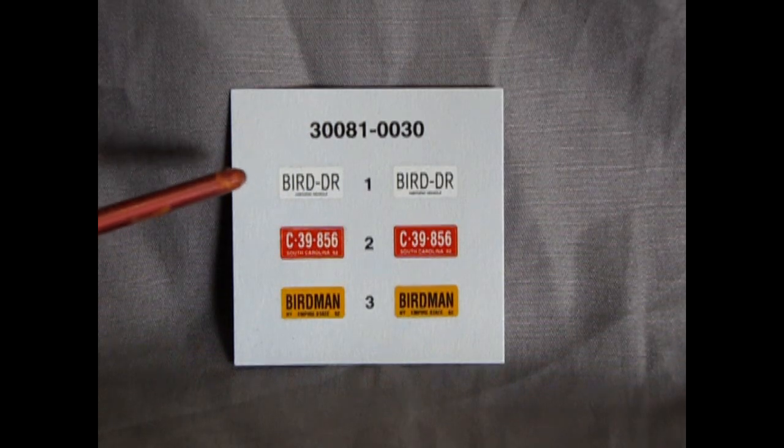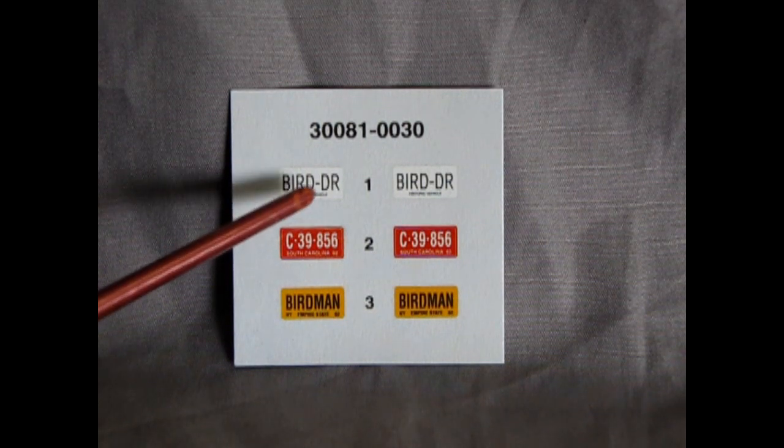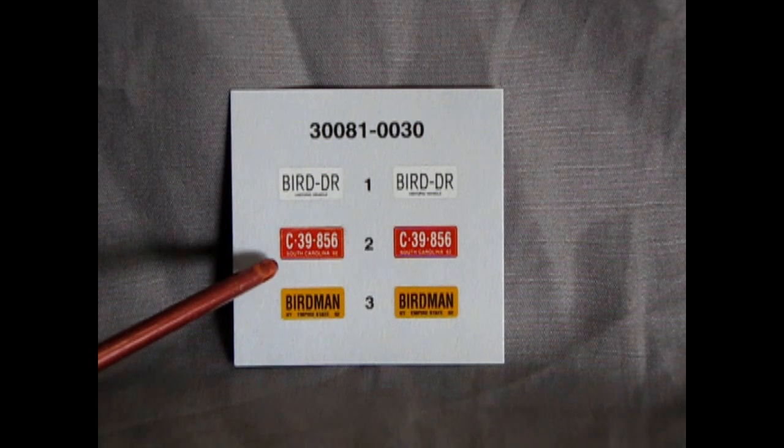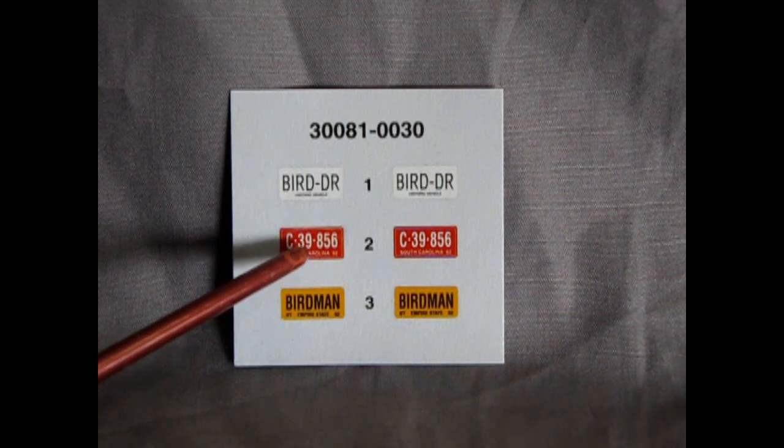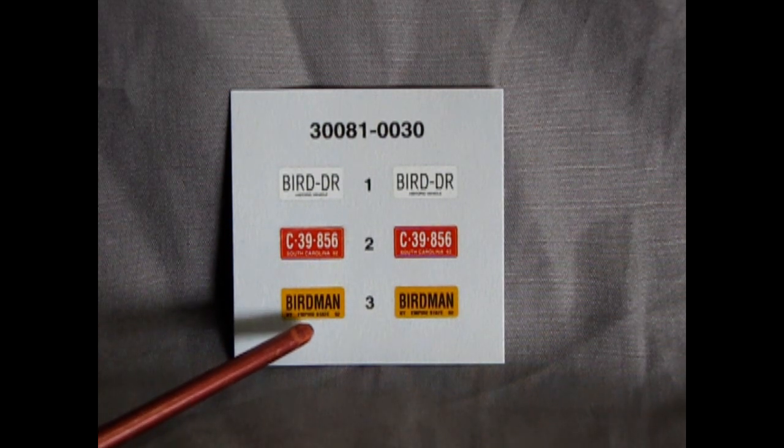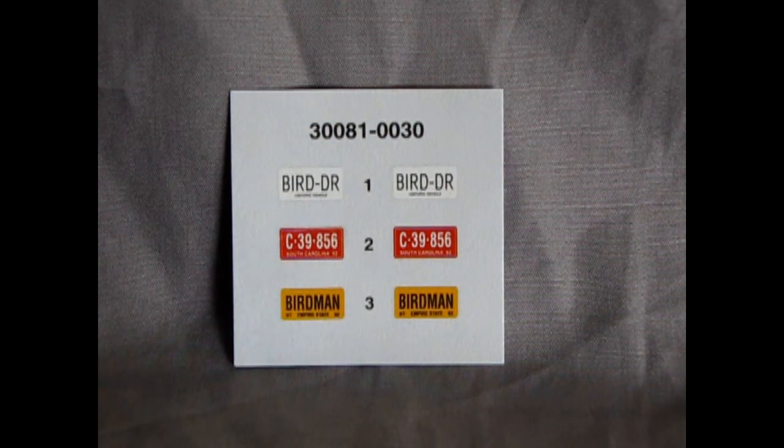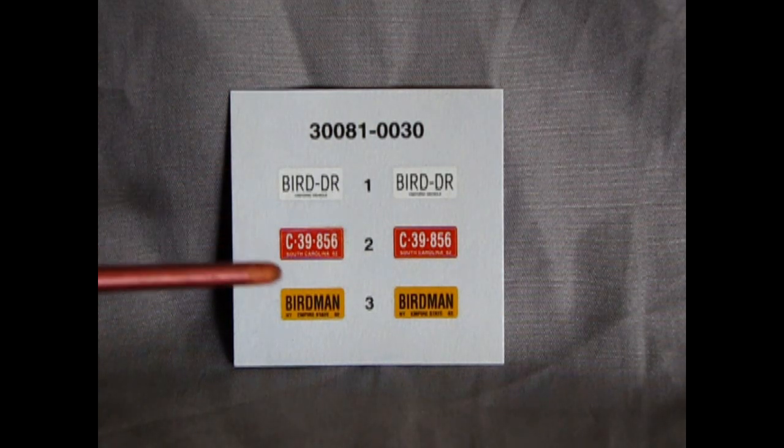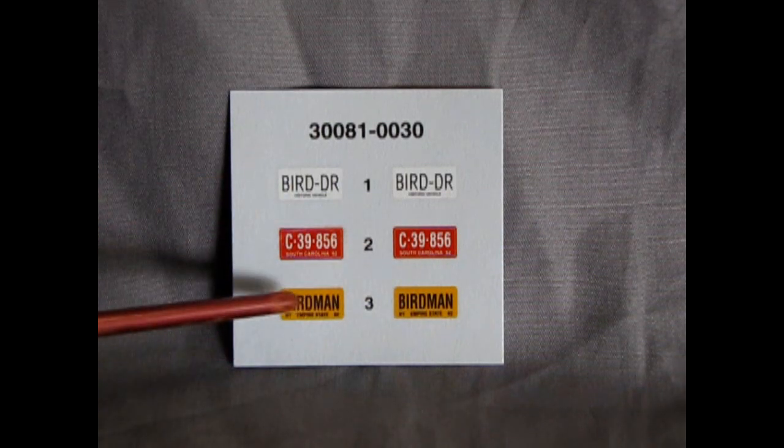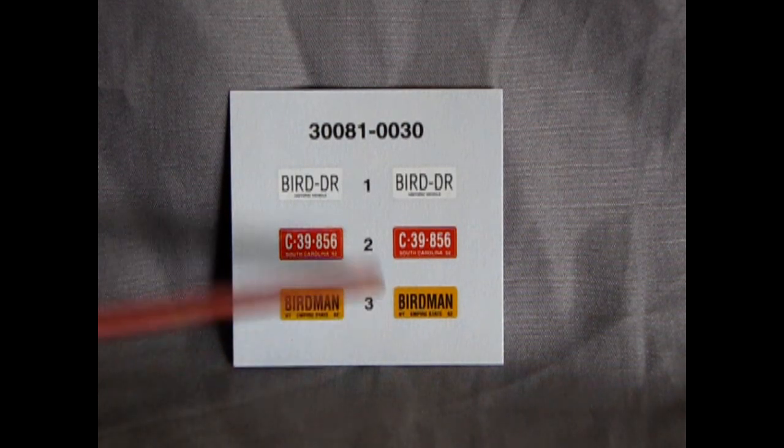we have our decal set, which really just consists of three license plates. You have these Bird TR, so Bird Drive, I guess. And then you've got a South Carolina C39-856 license plate. And then from the Empire State is the Birdman! Anyway, kind of a weird license plate to put in here. But if you want your car to be driven by the Birdman from Empire State, then you can put these on the back.